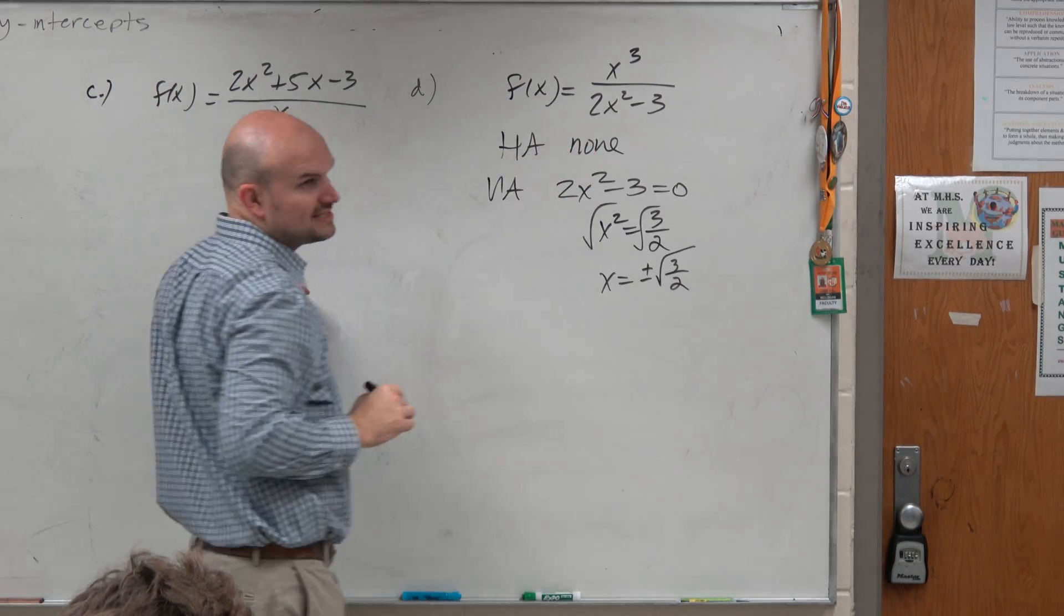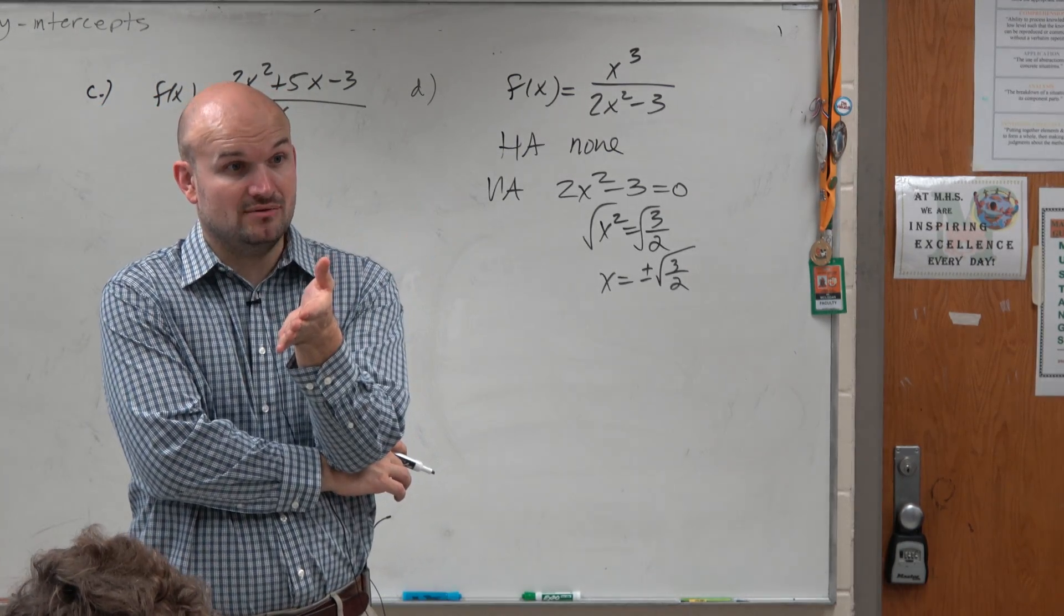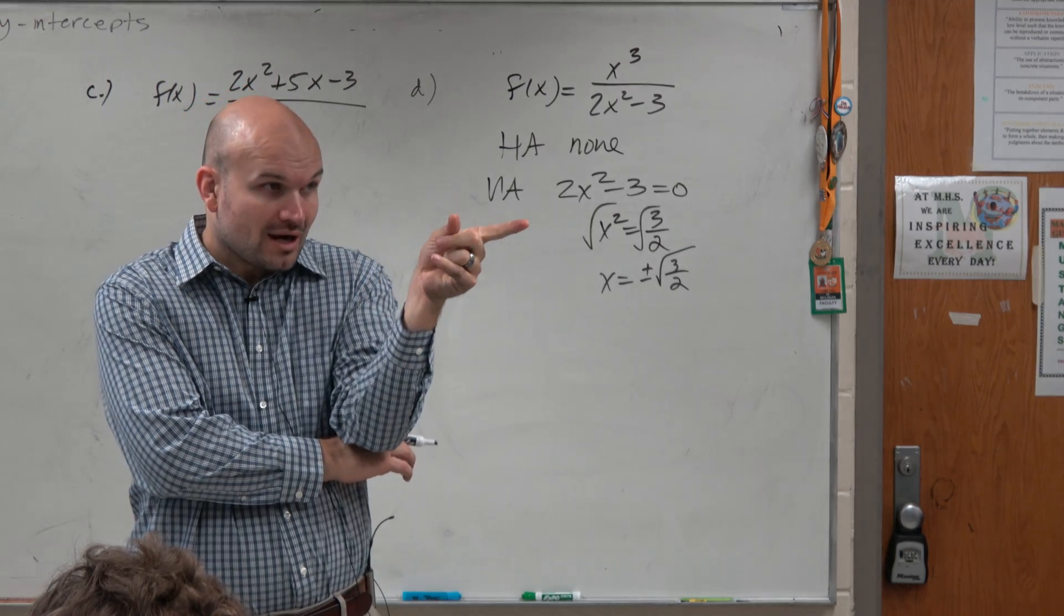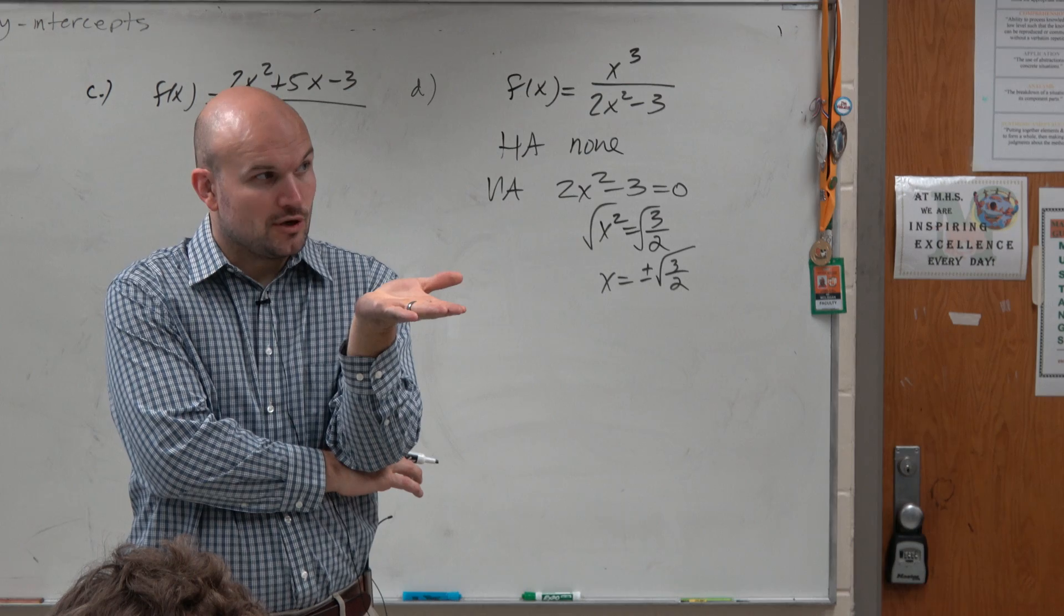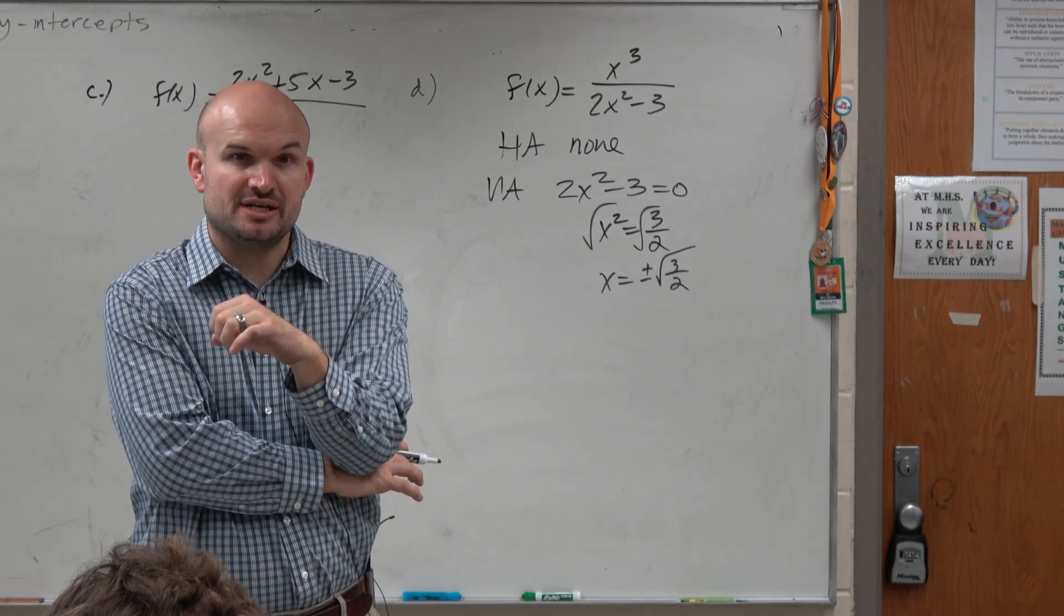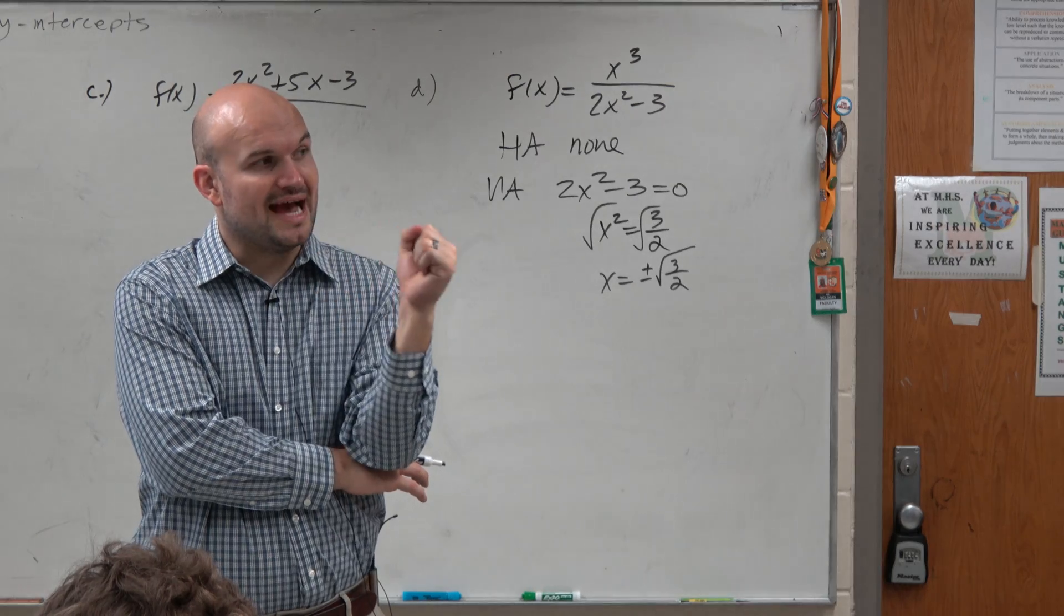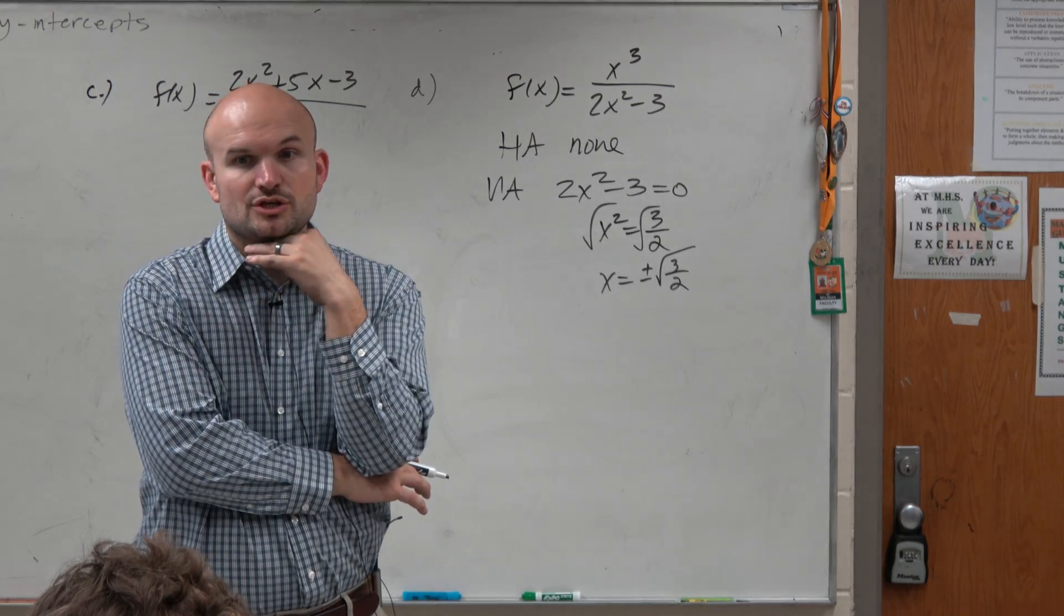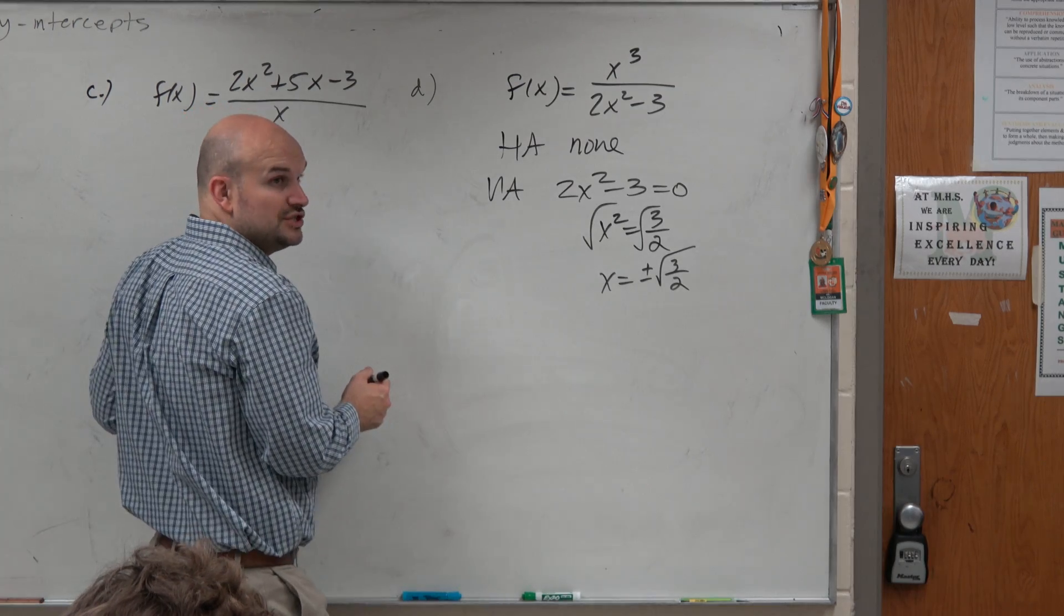But if I don't have a horizontal asymptote, I either have a hole, because something I divided out, which I know is not the case, or I'm going to have an oblique asymptote. So an oblique asymptote comes from the division of the numerator and denominator. So the oblique asymptote is y equals q of x, where q of x represents the quotient. So what we're going to do is do long division again.